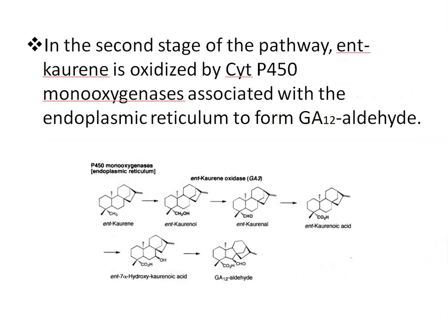In the second stage of the pathway, ent-kaurene is oxidized to GA12 aldehyde by cytochrome P450 monooxygenases, which are associated with the endoplasmic reticulum. First, ent-kaurene is converted to ent-kaurenone, then to ent-kaurenoic acid, which is converted to 7α-hydroxy-kaurenoic acid and ultimately GA12 aldehyde.